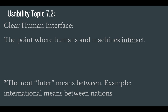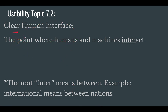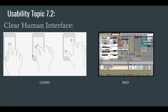We need to have clear human interfaces. A human interface is the point where humans and machines interact — note that 'inter' means between, as in international meaning between nations. When working with a machine, the interface should be very clear and understandable. For example, selecting something on a mobile device — click, expand, contract — is a clear human interface. Compared to a confusing interface full of too many buttons, that's a poorly done human interface versus a well-done one.